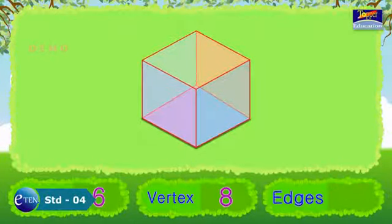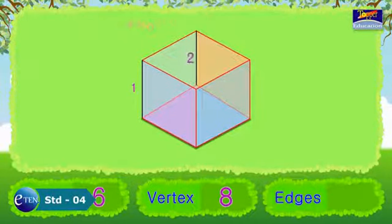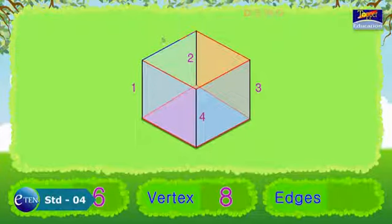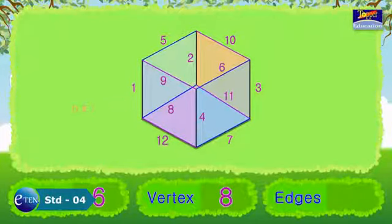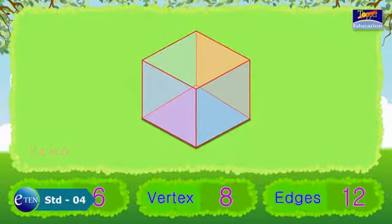And let's count the edges now. One, two, three, four, five, six, seven, eight, nine, ten, eleven, and twelve. A cube has twelve edges.